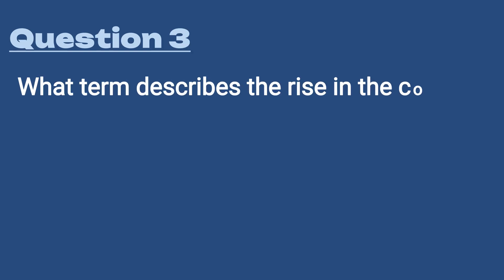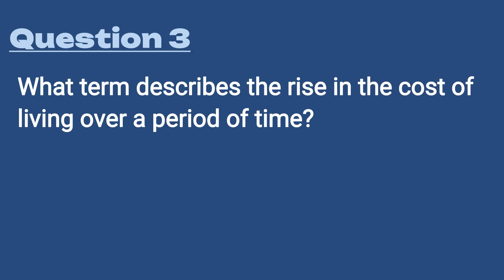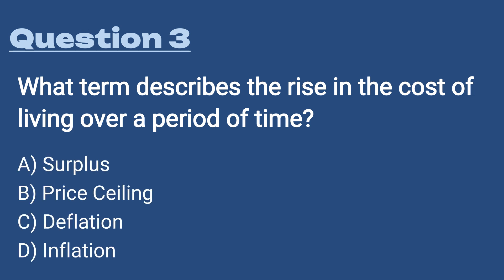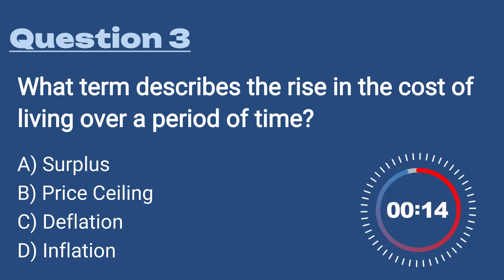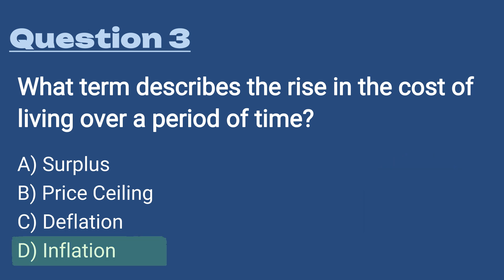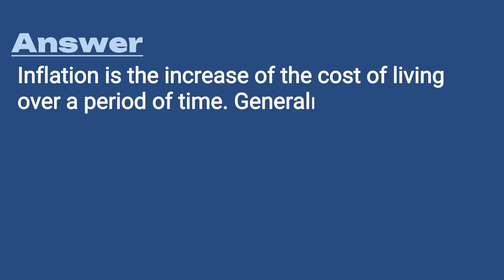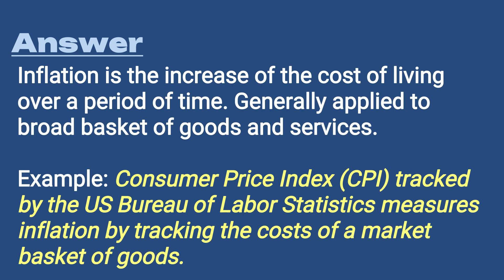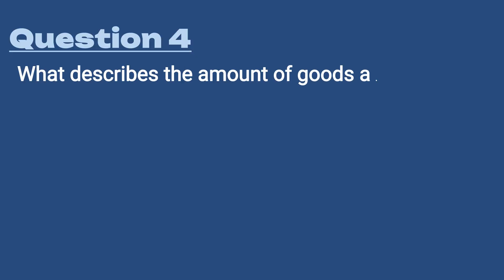Question number three: what term describes the rise in the cost of living over a period of time? A) Surplus, B) Price ceiling, C) Deflation, D) Inflation. The answer is D, inflation — the increase in the cost of living over a period of time, generally applied to a broad basket of goods and services. An example of a metric that tracks inflation is the Consumer Price Index, calculated by the U.S. Bureau of Labor Statistics.